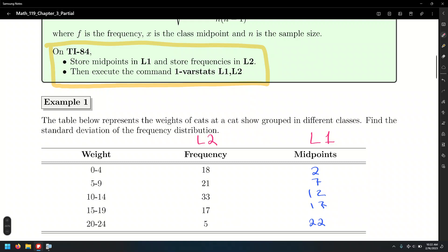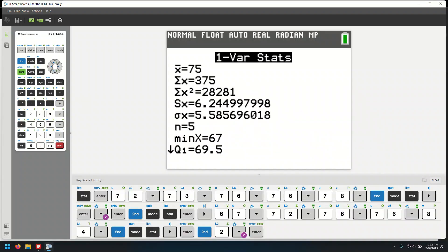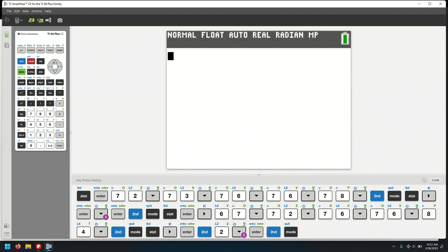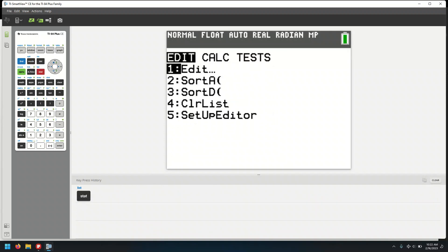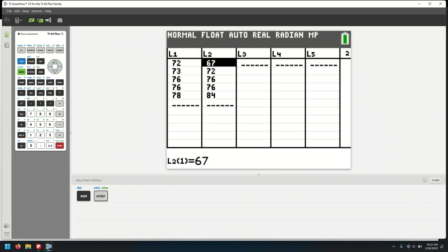Let's go to the graphing calculator and second quit. Let me clear the history here. I'm going to go stat, edit, and highlight L2 and just click on clear, and then go down once with the arrow, and it's going to clear everything at once. Let me do the same on L1, clear, scroll down, and that's going to empty our column.